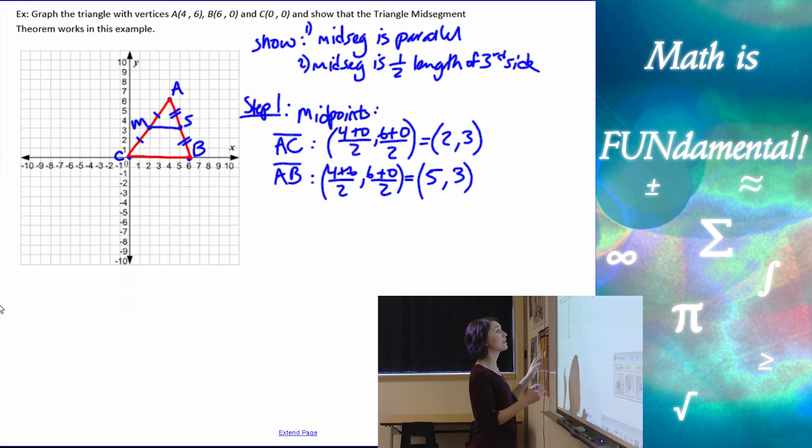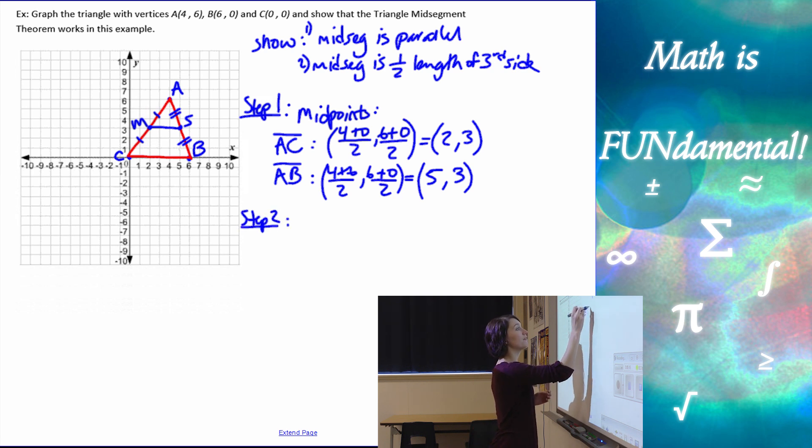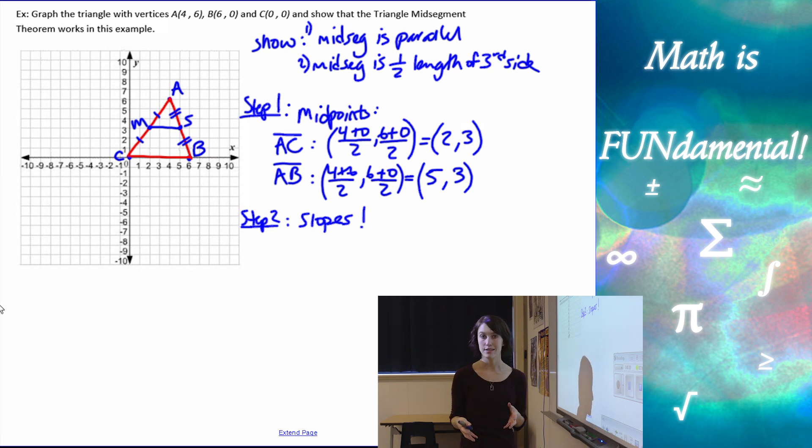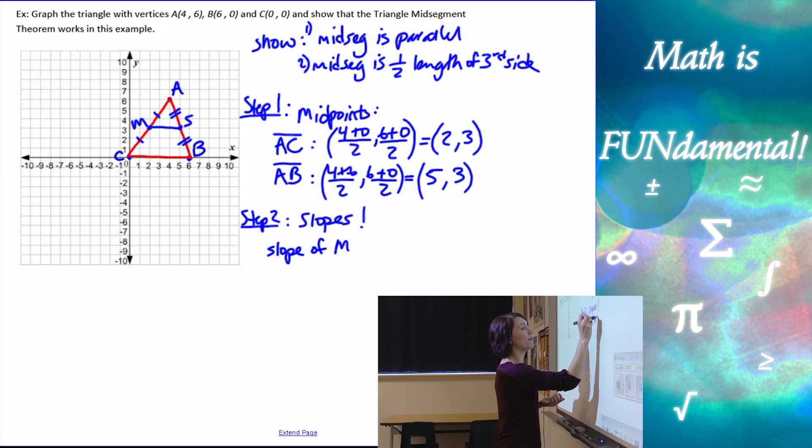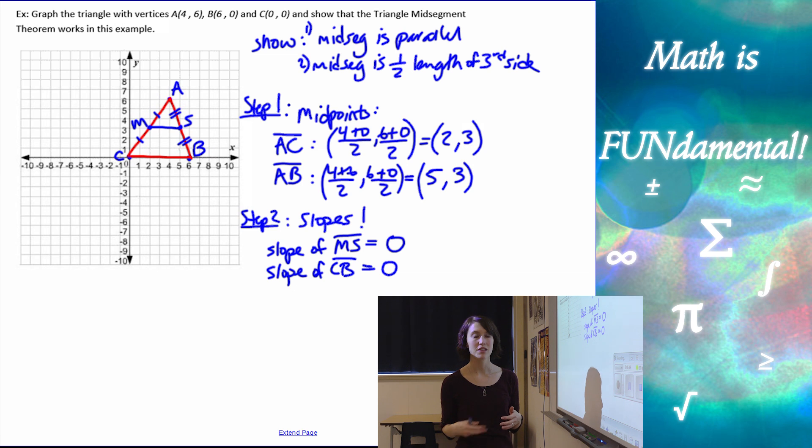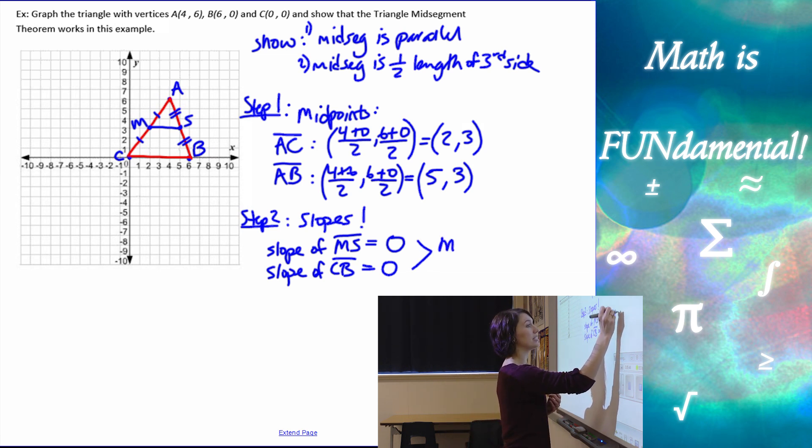So to show that something is parallel, I need to find the slopes. Slopes tell us that they're parallel. So my slope of MS, well, it's a horizontal line, so the slope of MS is going to be 0, and the slope of CB is 0. And we can use our slope formula, if they weren't horizontal, to show that they were the same.